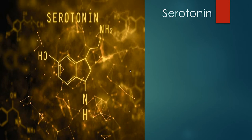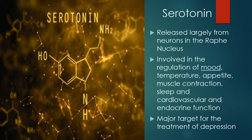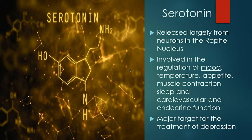Serotonin is largely produced in the raphe nucleus. Unlike GABA and glutamate, which are all over the place, serotonin has specific areas of concentration. It's heavily involved in the regulation of mood — this will come up when we talk about emotion. It's a major target for depressive disorders; serotonin reuptake inhibitors try to balance out serotonin tone in the brain. It's also involved in muscle contraction, temperature, appetite, and sleep functions like dreaming.